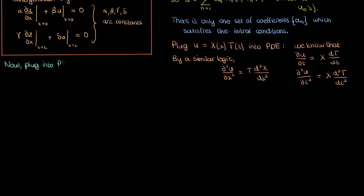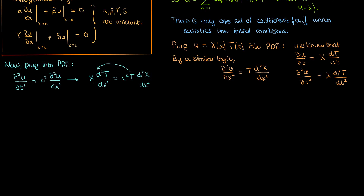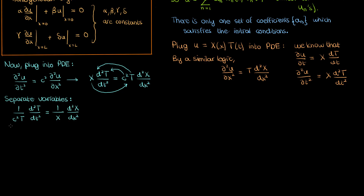Let's now plug the second partial of u with respect to t and the second partial with respect to x into our PDE. Now here's where the idea of separating variables comes in. We'll put all the terms containing time on one side and all the terms containing x on the other side, taking c squared and sticking it on the time side. So we're effectively dividing both sides by X and then by T and c squared — we've now separated x and t.